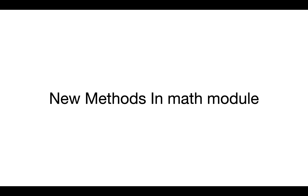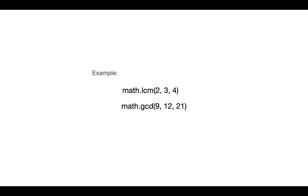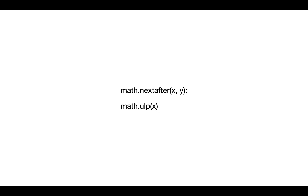The next and last update is in the math module. We now have the lcm() method which accepts multiple arguments and returns the least common multiple for those arguments. We also have an updated gcd() method — it used to accept only two arguments before 3.9, but now we can pass in multiple arguments to get the greatest common divisor. Two more rarely-used methods were also added: math.nextafter(), which returns the next floating-point value after x towards y, and math.ulp() (unit in the last place), which returns the value of the least significant bit of a float.